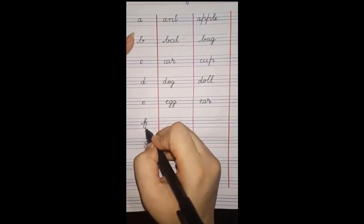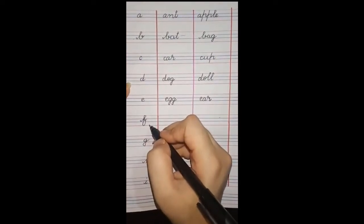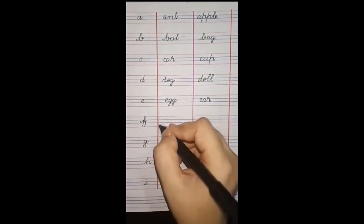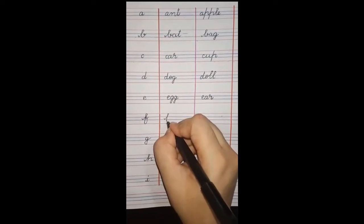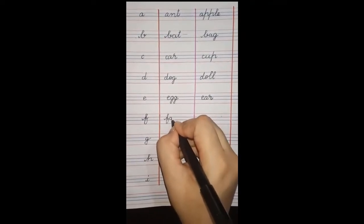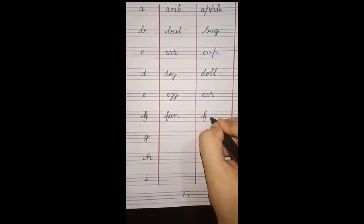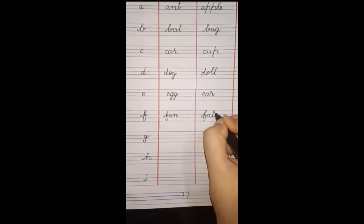Next letter hamara F. F se friends make karen. F - fan, F - frog, F - fish, F - five, F - four, F - finger. Okay students, hum write karenge fan, F - fan. F - fat. Fat means mota. Aapki class mein fat kaun hai?